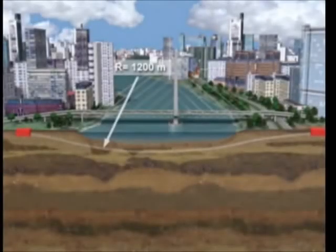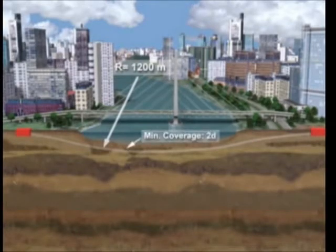A further advantage of pipejacking and microtunnelling is the opportunity to drive a curved alignment. The vertical curve radius, in this case 1500 meters, allows the riverbed to be tunneled under from a shallow working shaft. The minimum cover from the crown of the tunnel should not, however, be less than twice the external diameter of the pipeline.